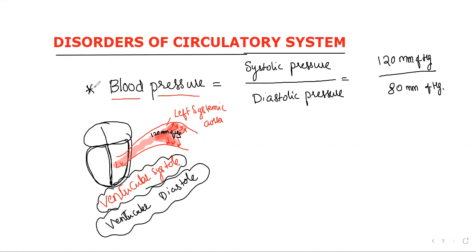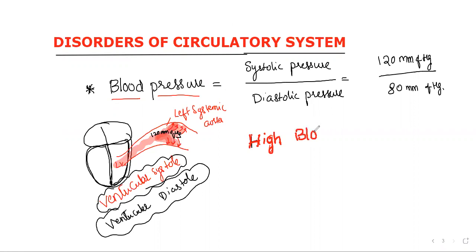People generally ask, 'Do you have blood pressure?' Everyone has blood pressure — no doubt about that. What they should actually ask is 'Do you have high blood pressure?' or more technically, 'Do you have hypertension?' As future medicos, we should change the question. High blood pressure and hypertension are the correct terms to use.